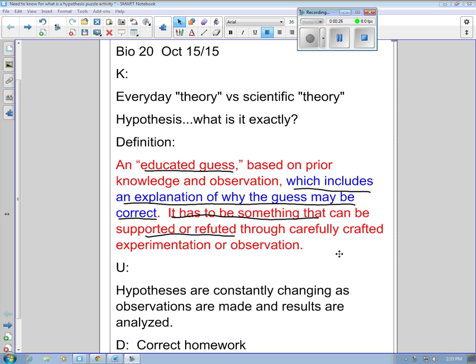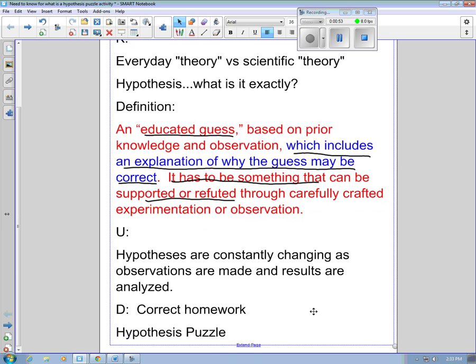So here's a definition that we talked about in class a little bit. We emphasize that it's an educated guess, but it must include an explanation of why the guess may be correct and also has to have the ability to be tested through experimentation or observation. And if it doesn't fit within those parameters, then it becomes a very questionable hypothesis. One other understanding here is that hypotheses are constantly changing as observations are made and the results are analyzed.